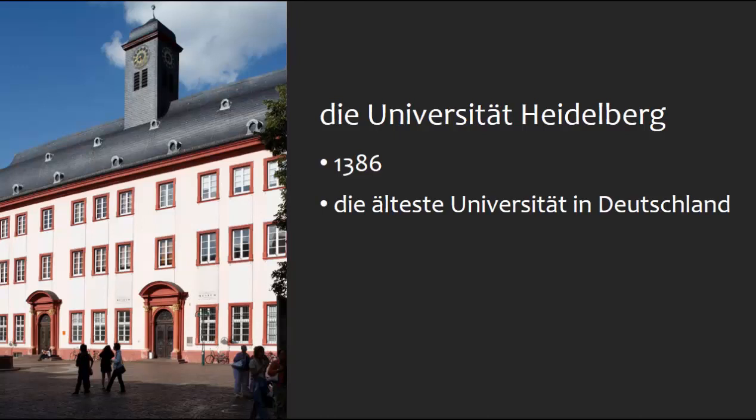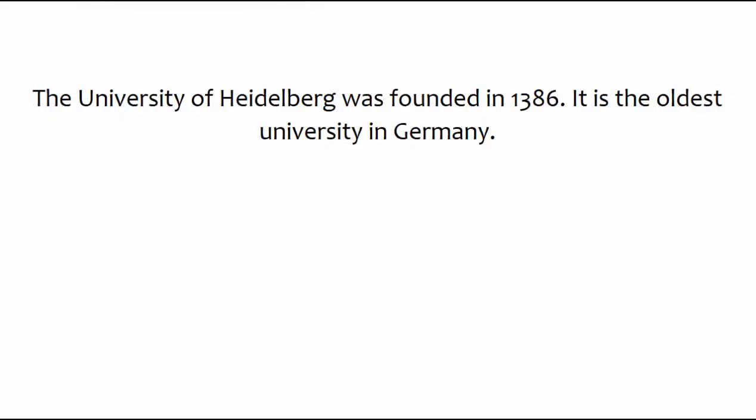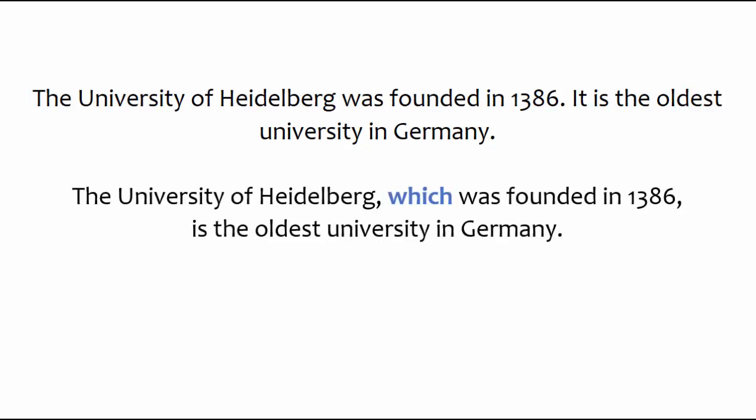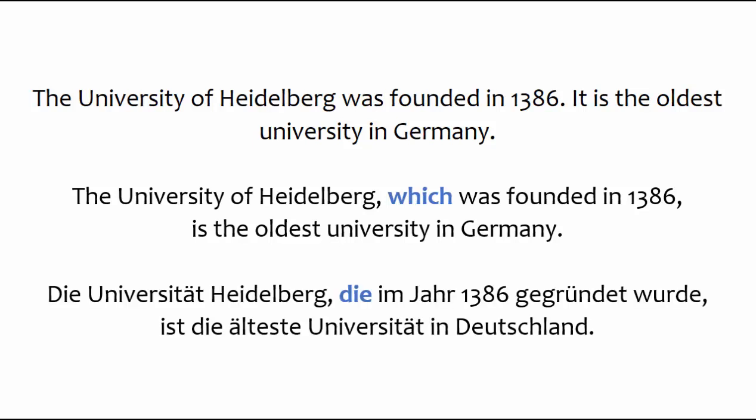Now let's say that you want to convey two things about the University of Heidelberg: that it was founded in 1386, and that it is the oldest university in Germany. One solution is to create two sentences, but sometimes good writing calls for longer, more flowing sentences with explicit connections between ideas. To make these two sentences into a longer, more flowing sentence, you could use a relative pronoun. In German, as in English, the relative pronoun lets you join two short sentences into one longer one, with clear connections between ideas.